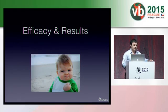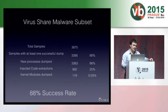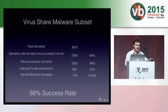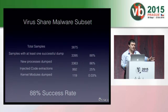Hundreds of samples were tested in Volatility Bot. I used a research environment comprised of five Windows XP machines and each sample was executed for one minute. Success is defined by the ability to extract injected code, a kernel module, or a dump of a process. I took a subset from the latest VirusShare archive containing a total of around 5,000 samples and submitted them to Volatility Bot, noticing a high success rate of 88%. Note that not all samples inject code or load a kernel driver — some are installers of potentially unwanted programs or corrupted executables.